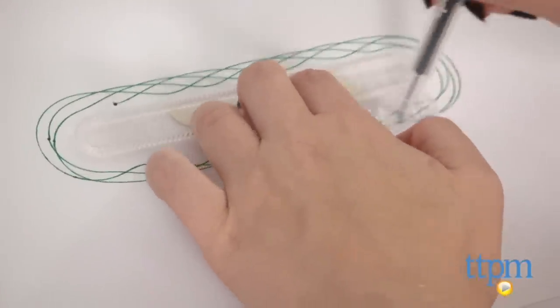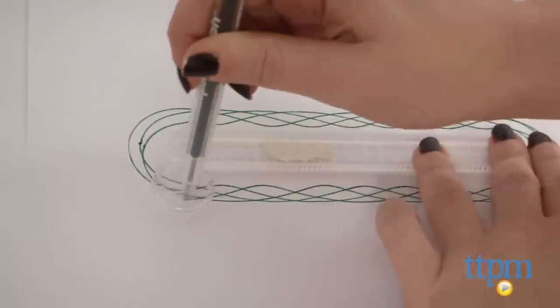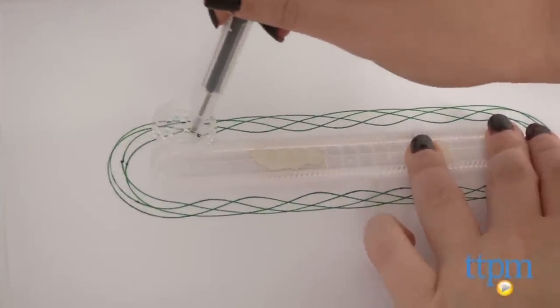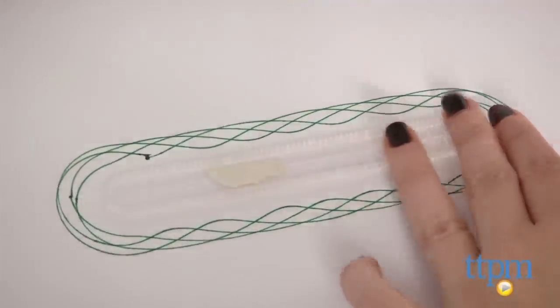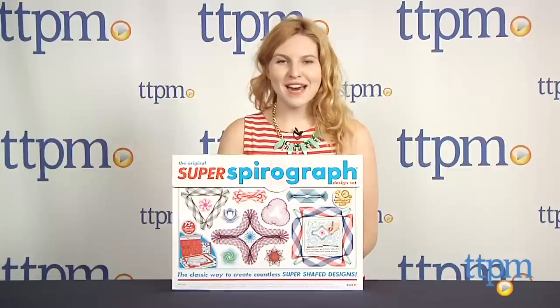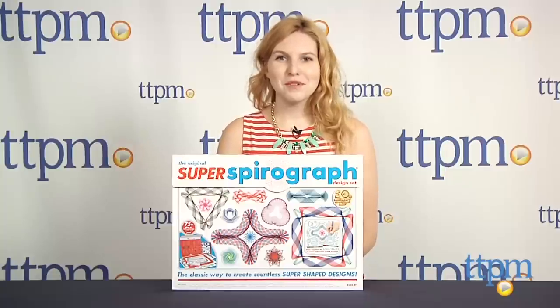This special limited edition original Super Spirograph design set is from Cahoot's and it's for ages 8 and up. For more information on this and other Spirograph toys, head over to our website at TTPM or subscribe to our YouTube channel for more great reviews every day.